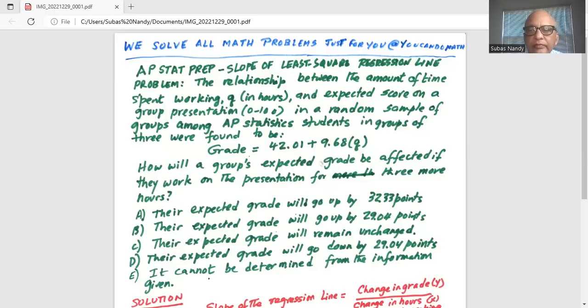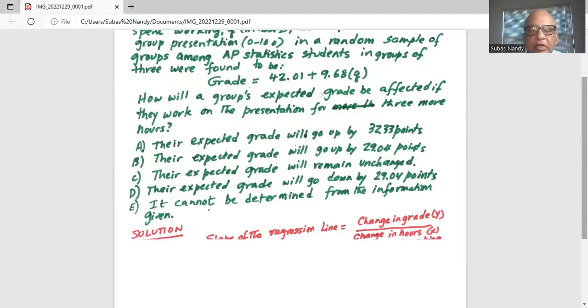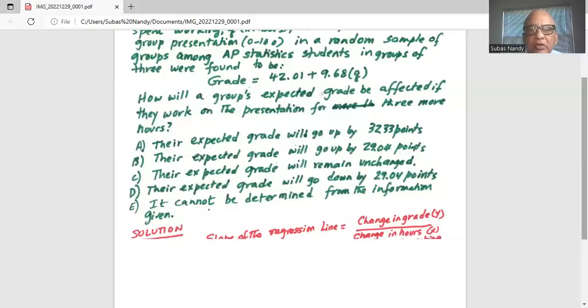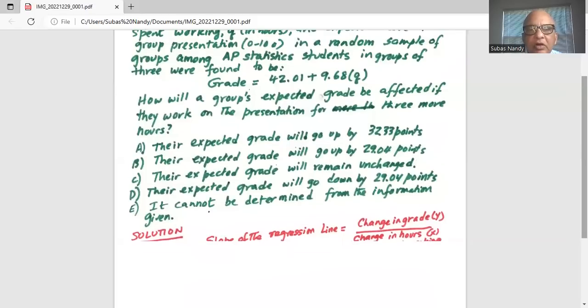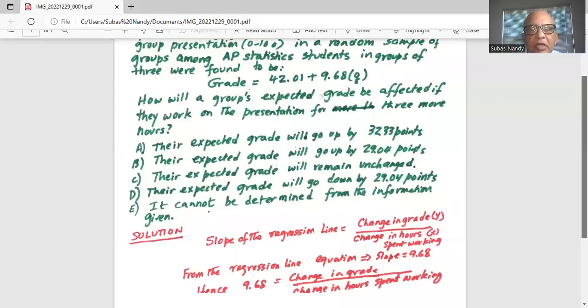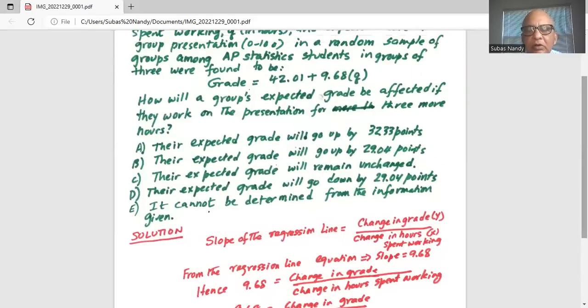So we are going to look at the slope of the regression line. The slope of the regression line is the coefficient of Q. Here grade is your dependent variable and it depends on Q which is the independent variable.